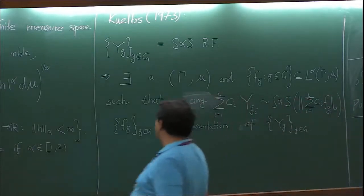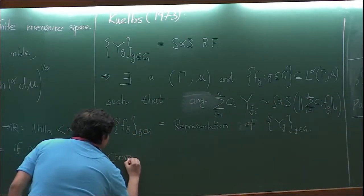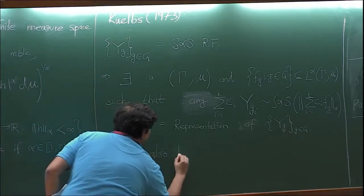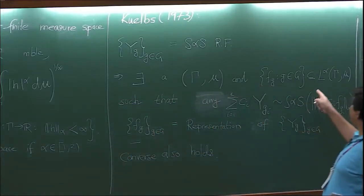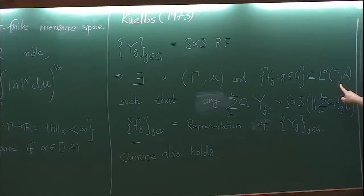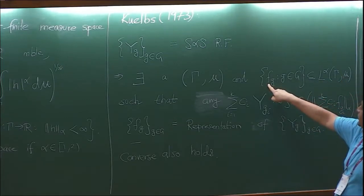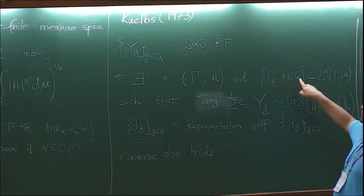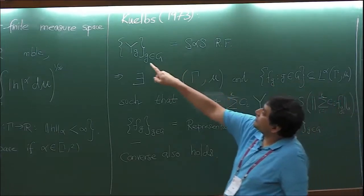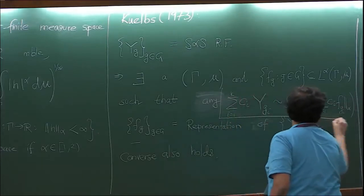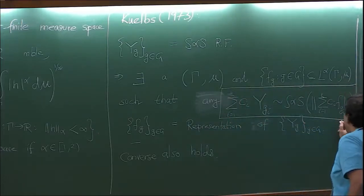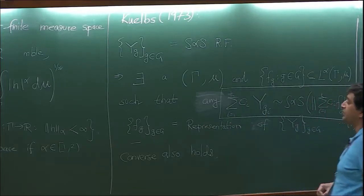The converse is also true. If you start with any sigma-finite measure space gamma and any collection of L^alpha functions indexed by G, you can always find a symmetric alpha stable random field satisfying this property.